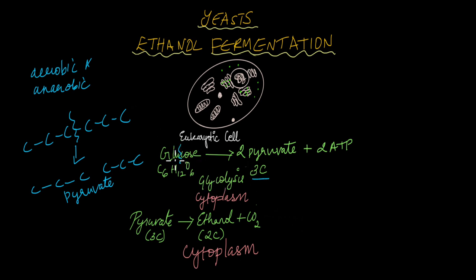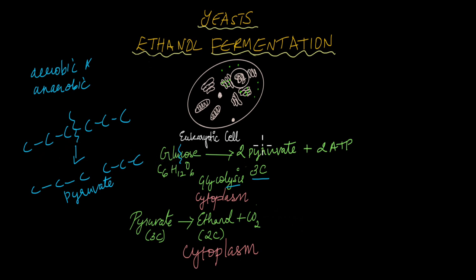This step is known as glycolysis because it is the breakdown of glucose — 'glyco' refers to glucose and 'lysis' means to break down. Glycolysis is the first step in anaerobic respiration, where glucose is broken down to two molecules of pyruvate, and two molecules of ATP are produced.